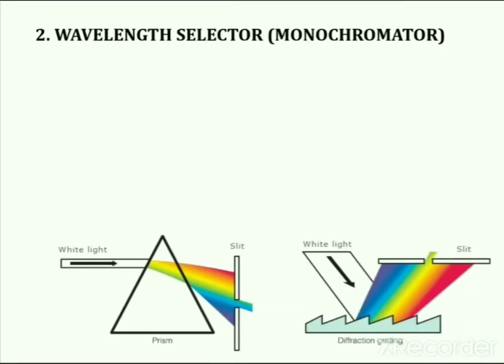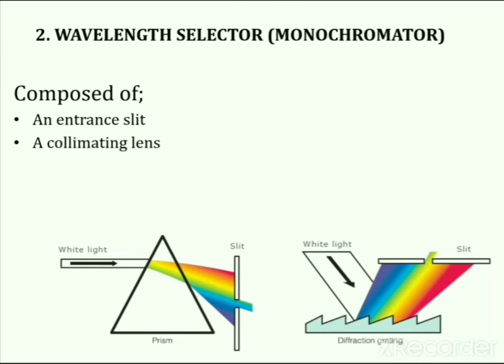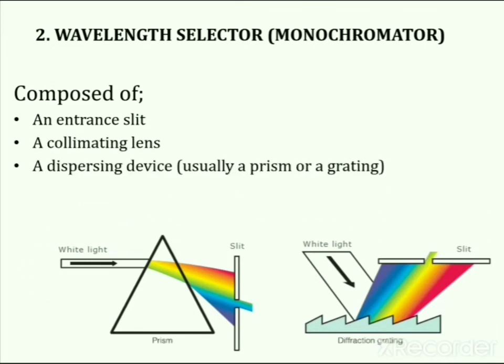The next important part of the atomic absorption spectrophotometer is the wavelength selector or monochromator. A monochromator is composed of an entrance slit, a collimating lens, a dispersing device — usually a prism or grating — a focusing lens, and an exit slit.